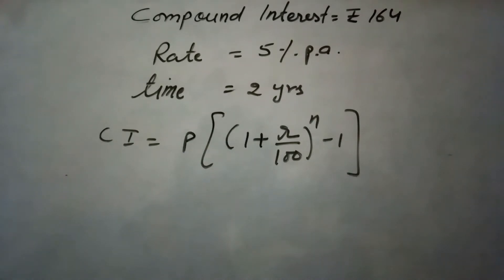So here in this question we are given compound interest, rate of interest, time, and we need to find the principal. So we will use the formula here: compound interest equals to principal into (1 plus r over 100) raised to power n minus 1. And by substituting the values here which are given we can find the principal.